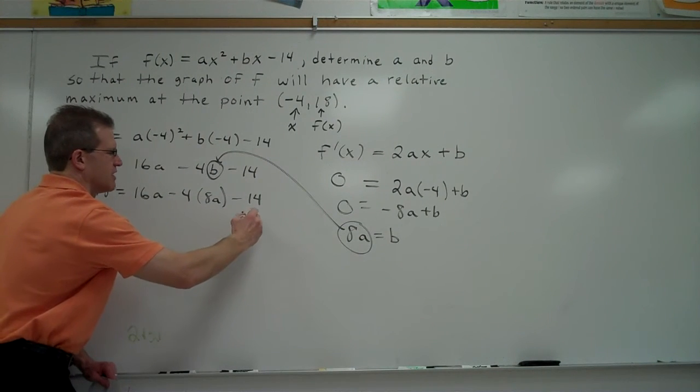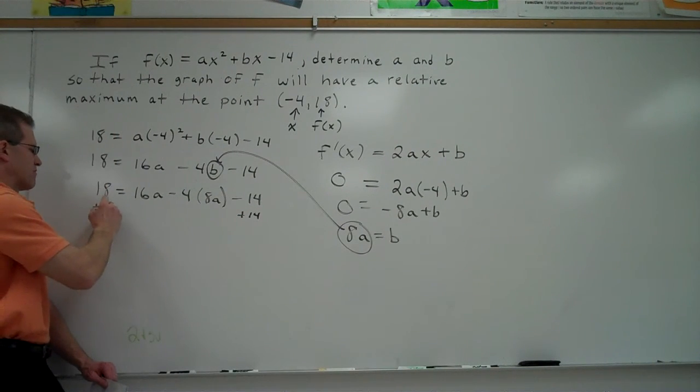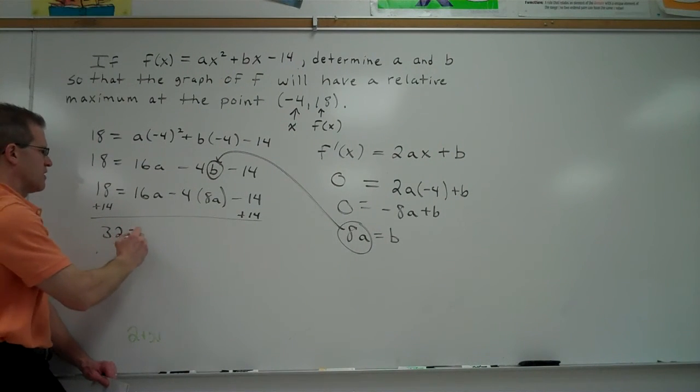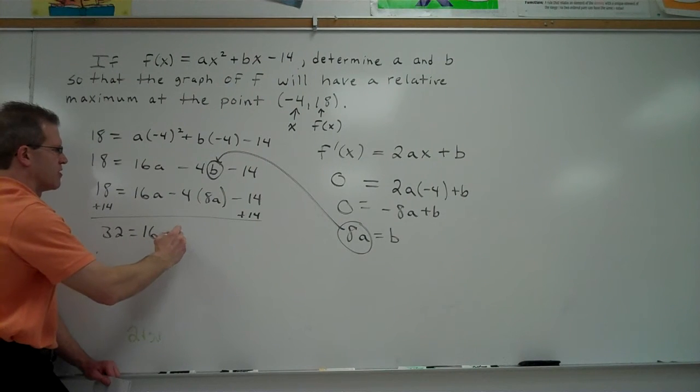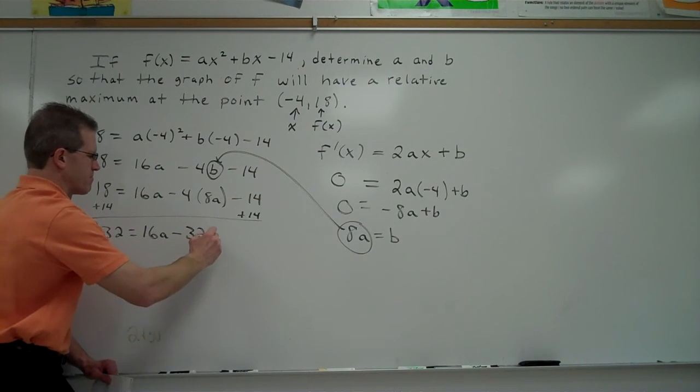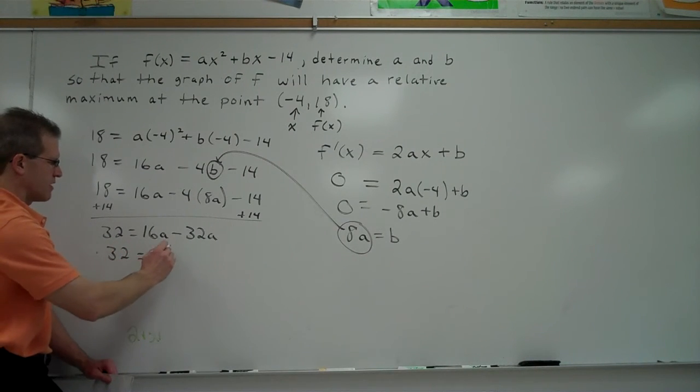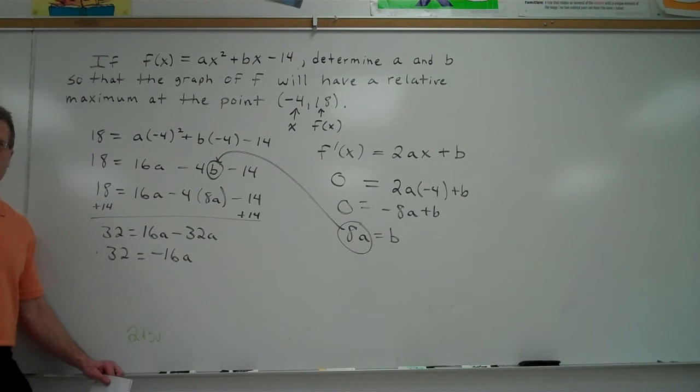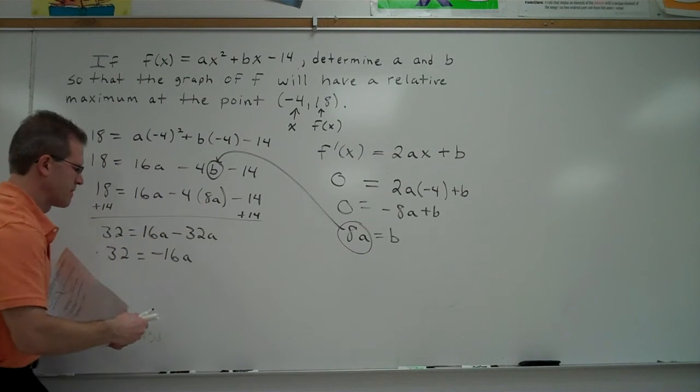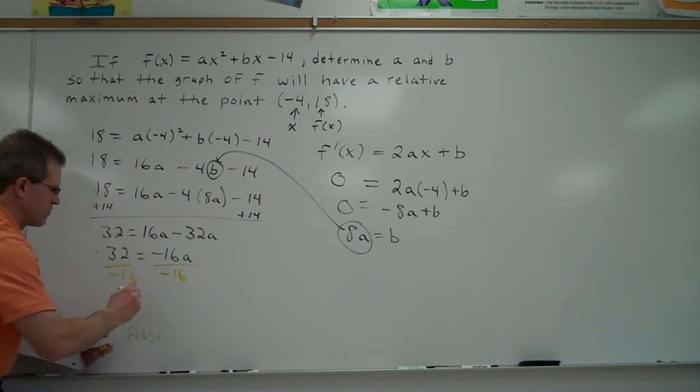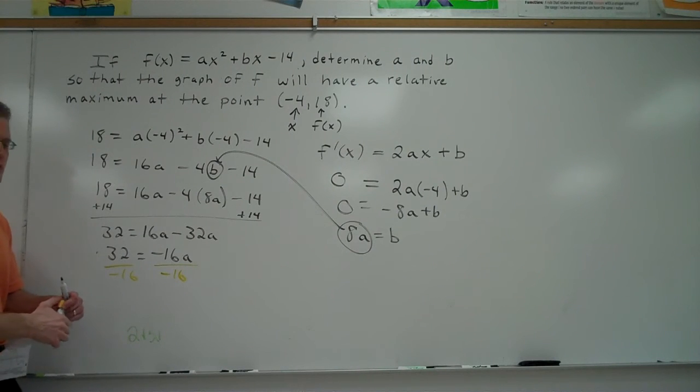I could add 14 to both sides. That's going to give me 32 equals 16a minus 4 times 8 would be 32a. So 32 equals negative 16a. Divide by negative 16 on both sides. What's a going to equal? Negative 2. Negative 2.